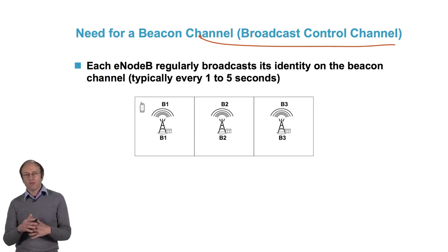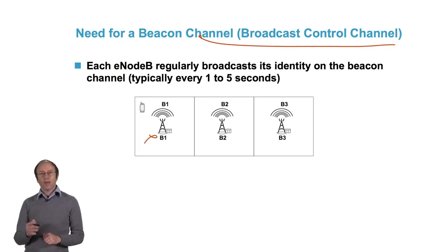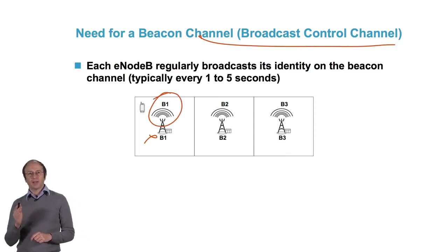It's that each eNodeB broadcasts its identity regularly on a radio frequency, typically every 1 to 5 seconds. We have, for example here, eNodeB B1, which broadcasts its identity B1, B2 for the other, and B3.